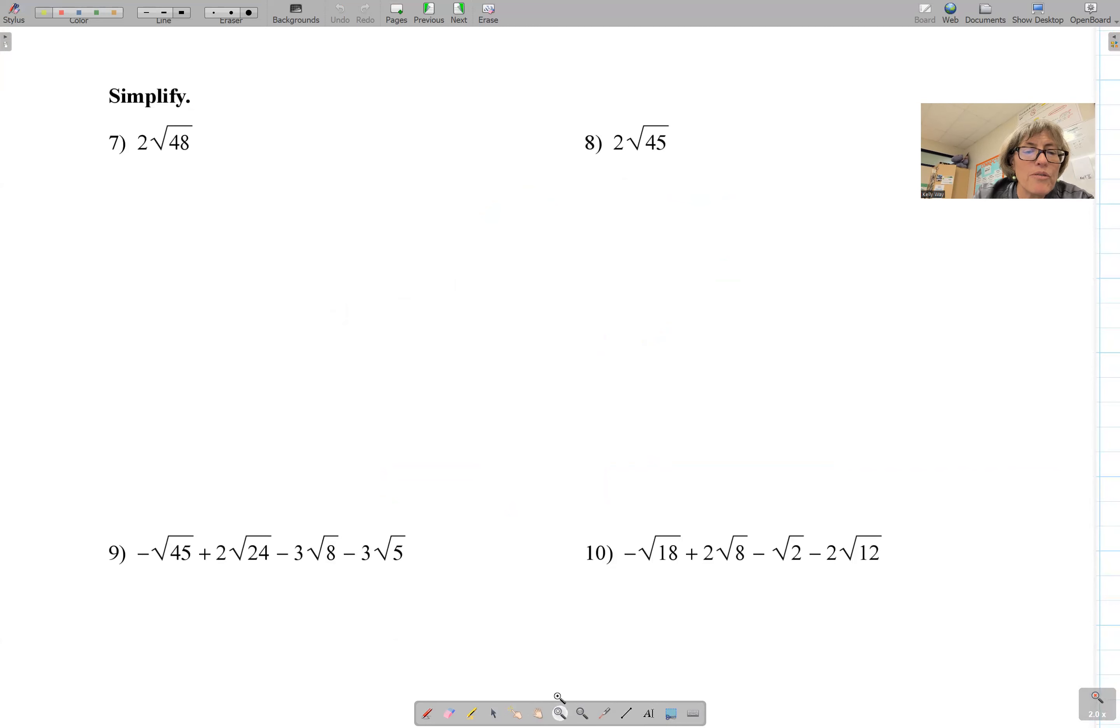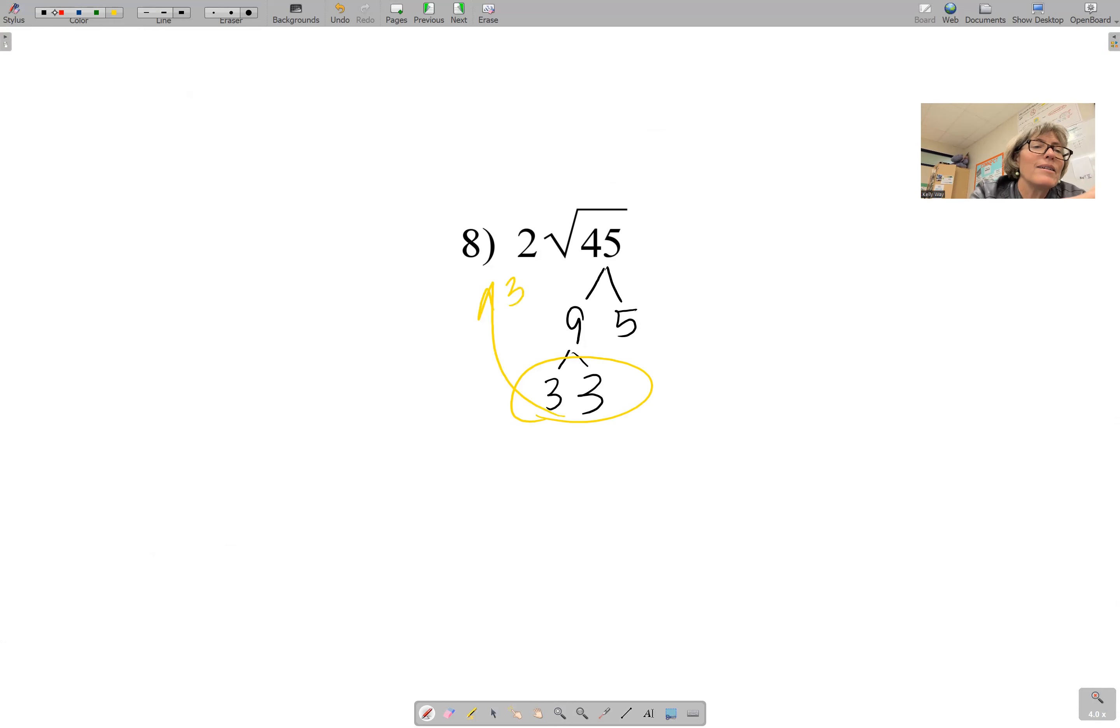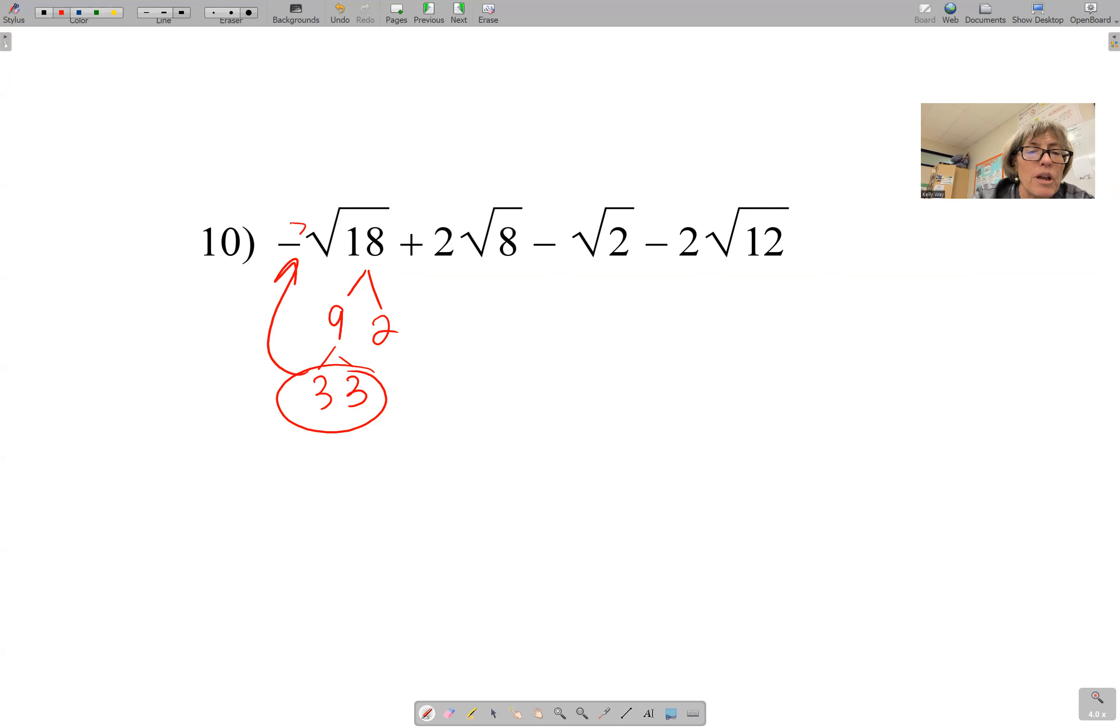When it comes to simplifying, you simply do the tree. And then you take out the pairs. And you multiply what's on the outside. This one down here, we have to add and subtract. But before we can do that, you have to simplify. So we're going to simplify 18. That's going to be 9 and 2, 3 and 3. I have a pair of 3s. That's going to come out as 1, 3. So this becomes -3√2.